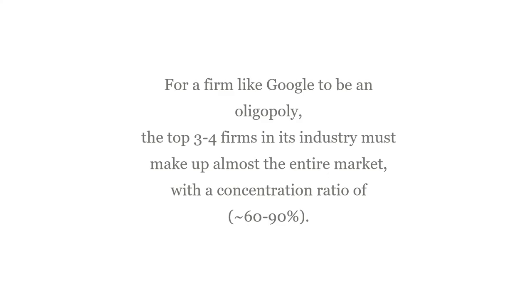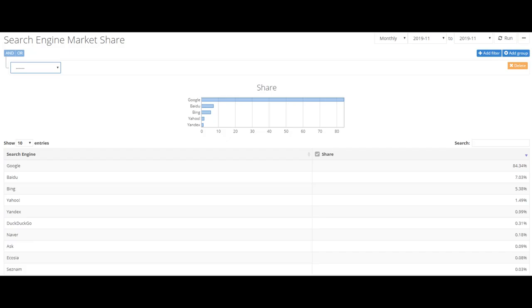To verify Google as an oligopoly, the top 3-4 firms in the industry must make up almost the entire market, with a concentration ratio at around 60-90% between them. Looking at the net market share for search engines online, the data shows that Google makes up 84% of the market, followed by Baidu with 7%. Looking at the data, it's safe to assume that these firms are oligopolies.